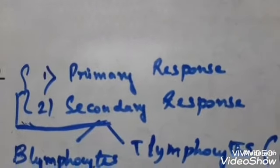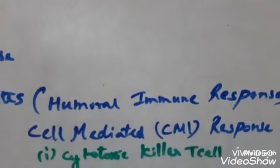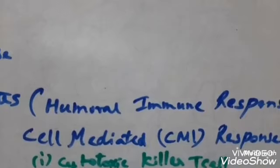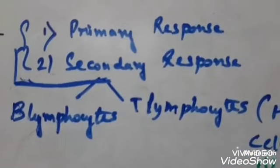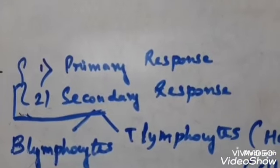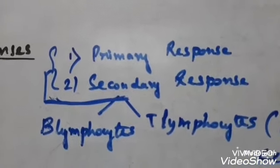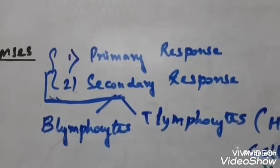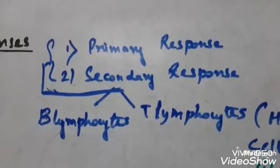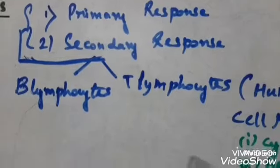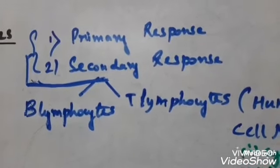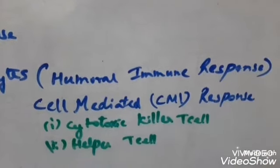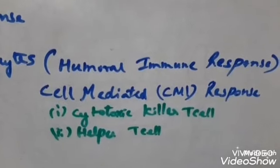These responses can be classified as humoral immune response and cell-mediated response. B lymphocytes, or B cells, produce an army of proteins called antibodies in response to pathogens. These antibodies are found in our blood. T lymphocytes or T cells help the B cells to produce antibodies. This action is part of humoral immunity — 'humor' referring to blood or lymph.